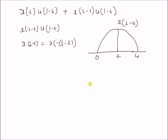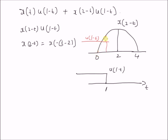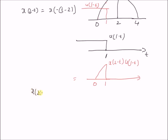Now if we multiply x of 2 minus t with u of 1 minus t, the product is only non-zero from 0 to 1. Therefore x of 2 minus t multiplied by u of 1 minus t equals x of 2 minus t for values of t between 0 and 1, and 0 elsewhere.